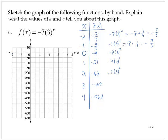0, negative 7; 1, negative 21; 2, negative 63; 3, negative 189; 4, negative 567.